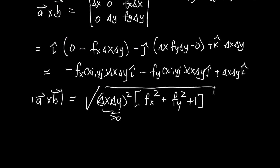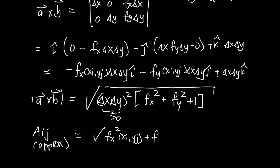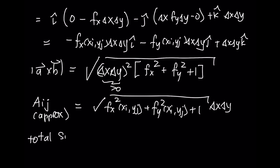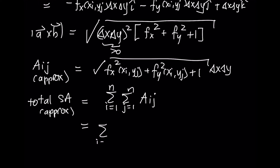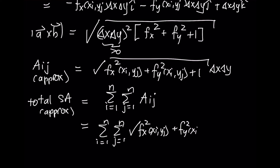Each one of those terms is positive. So the area of this patch is approximately the square root of fx²(xi, yj) plus fy²(xi, yj) plus 1, times delta x delta y. The total surface area approximation is then simply the double sum, i equals 1 to n, j equals 1 to n, of the square root of fx²(xi, yj) plus fy²(xi, yj) plus 1, times delta x delta y.